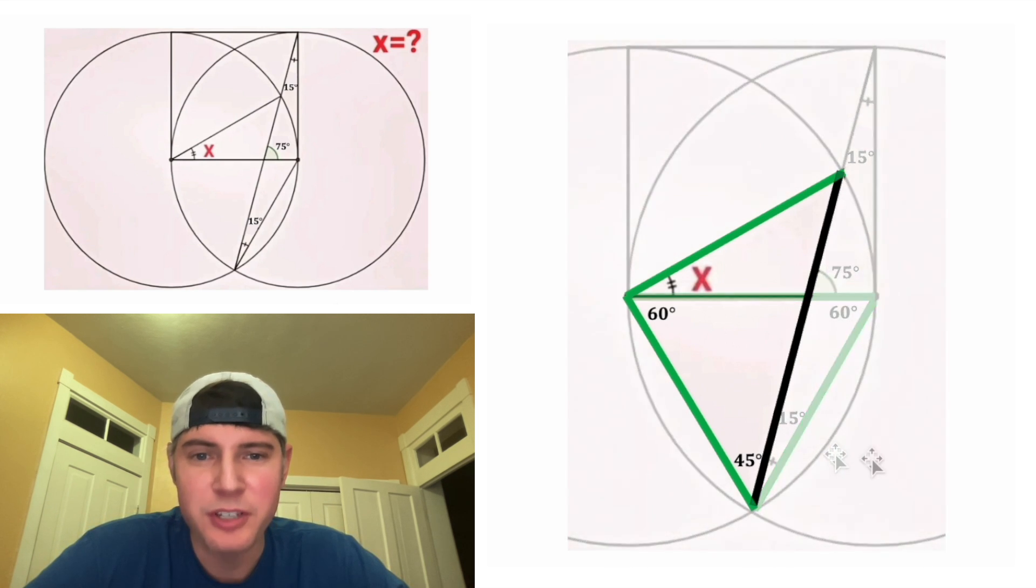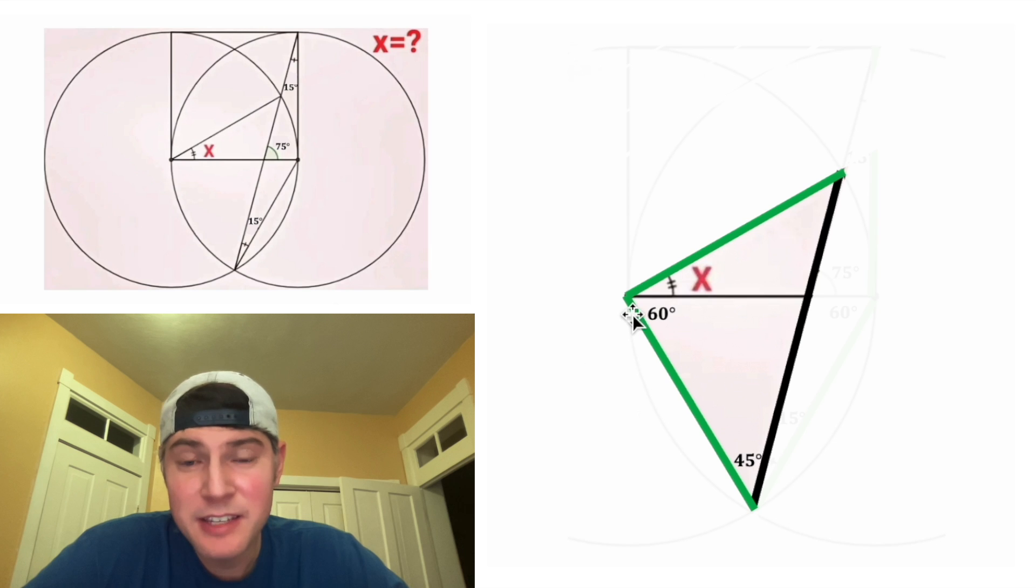I want to complete this side right here and focus on this triangle. This is an isosceles triangle. Two of the sides are congruent. That means that the base angles are also congruent. So this angle up here has to be 45 degrees.